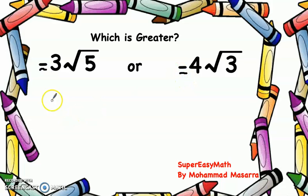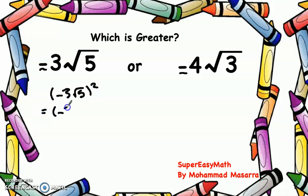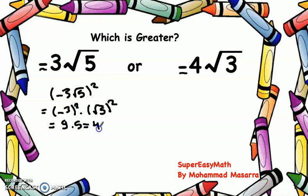We will do the same: square both numbers. So (-3√5)² is equal to (-3)² multiplied by (√5)², which equals 9 times 5, equal to 45. And here, similarly, (-4√3)².